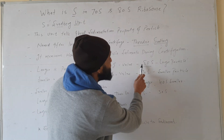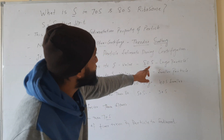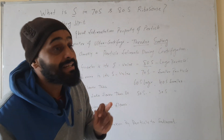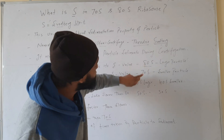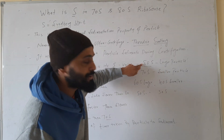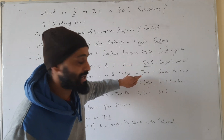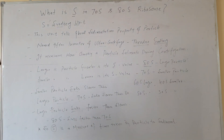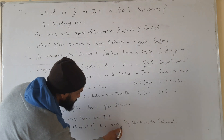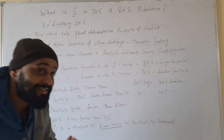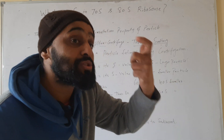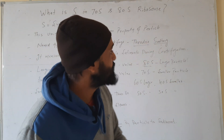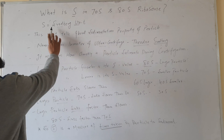So this S is telling us the sedimentation property — 80S sediments faster because it is of large size, and 70S sediments slower because it is of smaller size. So this S is a measure of the time taken for a particle to sediment during centrifugation. This is the Svedberg unit.